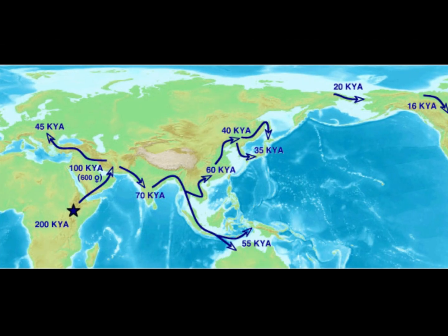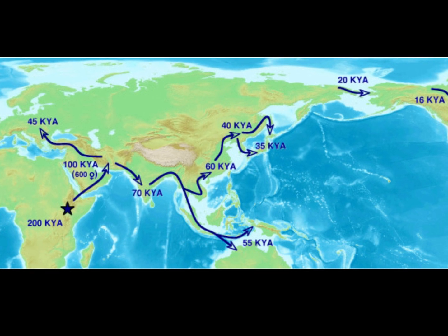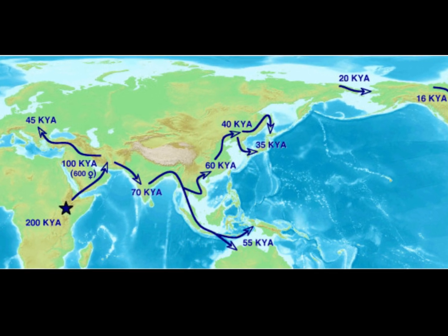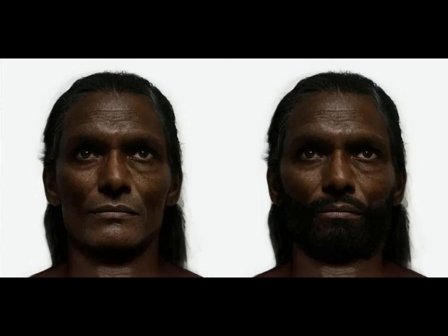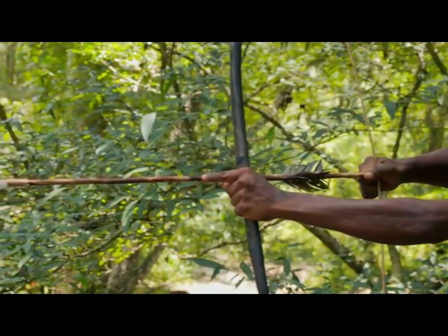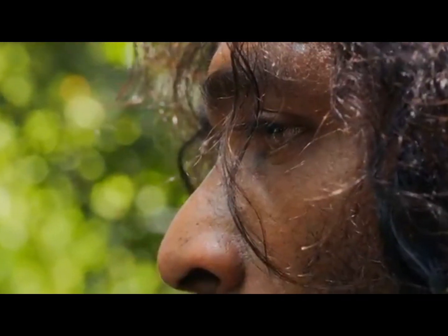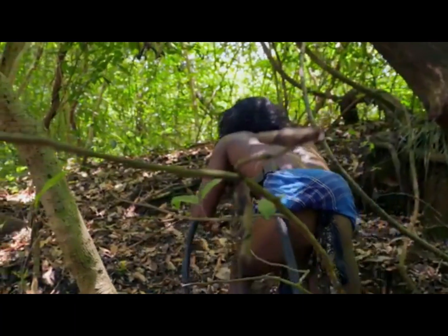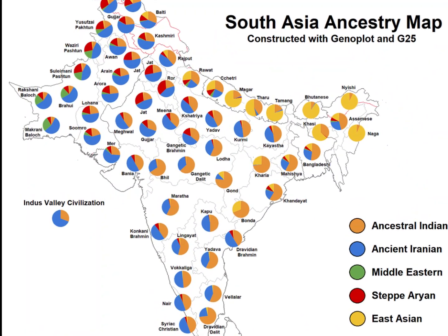The first migrations into the Indian subcontinent were by an East Eurasian group we now refer to as the AASI — Ancient Ancestral South Indians. They were hunter-gatherers, had darker skin, broader features, and on average constitute about 40-50% of South Asian ancestry. However, this depends on the region in South Asia you are from, as the more northwest you go, the lower the rate of this ancestry is.